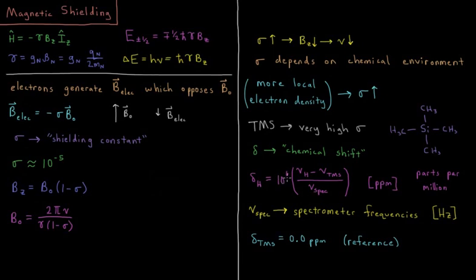This multiplying by 10 to the sixth here makes it that the units here that we're talking about are parts per million, sometimes abbreviated ppm. And this spectrometer frequency, that's typically going to be measured in hertz, or megahertz, etc. So we're just making sure to use whatever units we need to use there to make everything cancel out.